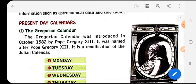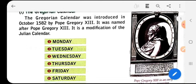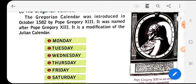The Gregorian calendar. The Gregorian calendar was introduced in October 1582 by Pope Gregory 13. It was named after Pope Gregory 13. It is a modification of the Julian calendar. So previously it was the Julian calendar that was in existence but in 1582 Pope Gregory 13 discovered the Gregorian calendar.